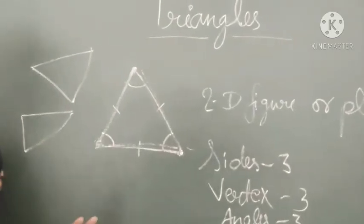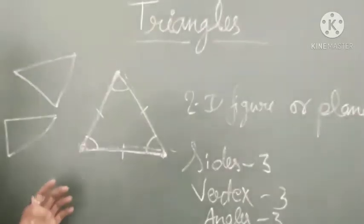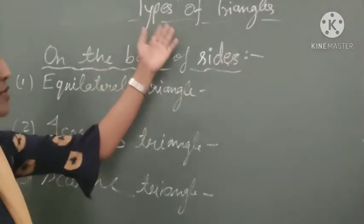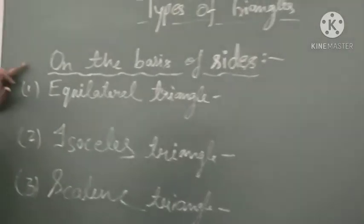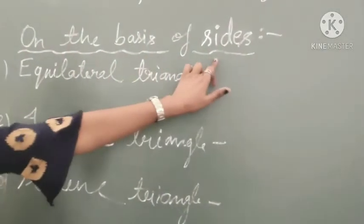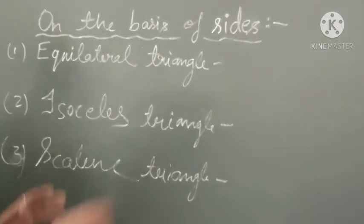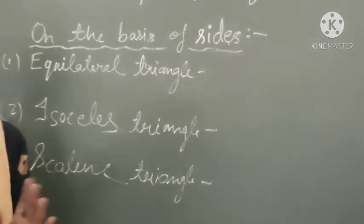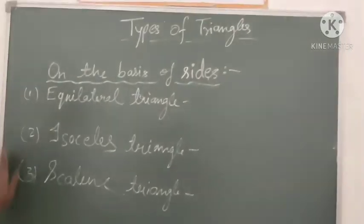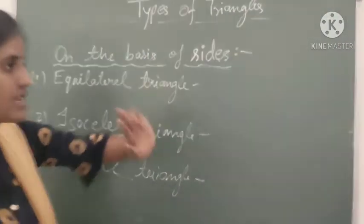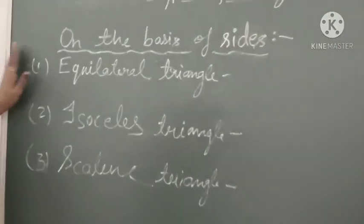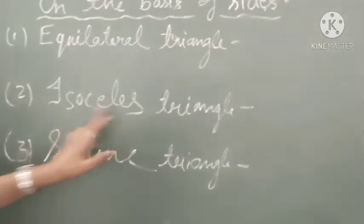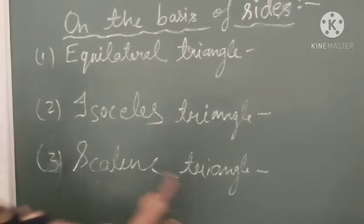These are also triangles. So I am going to explain the types of triangles. Types of triangles on the basis of sides: there are 3 types — equilateral triangle, isosceles triangle, and scalene triangle.